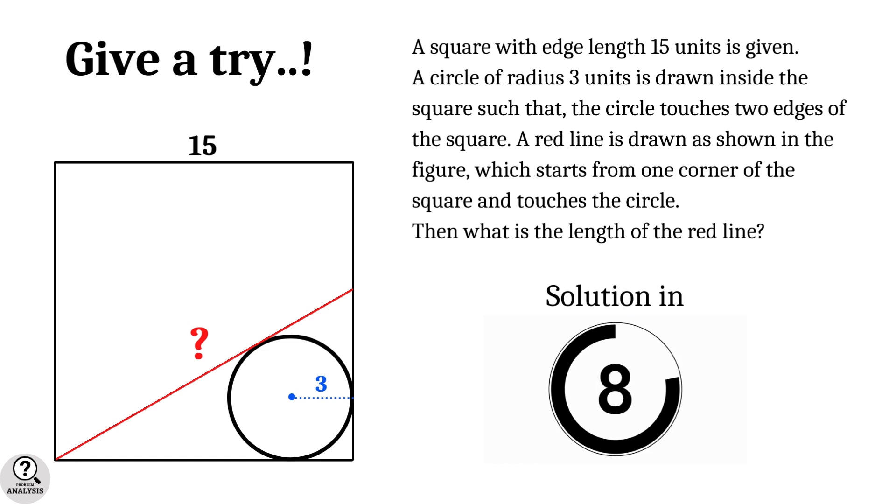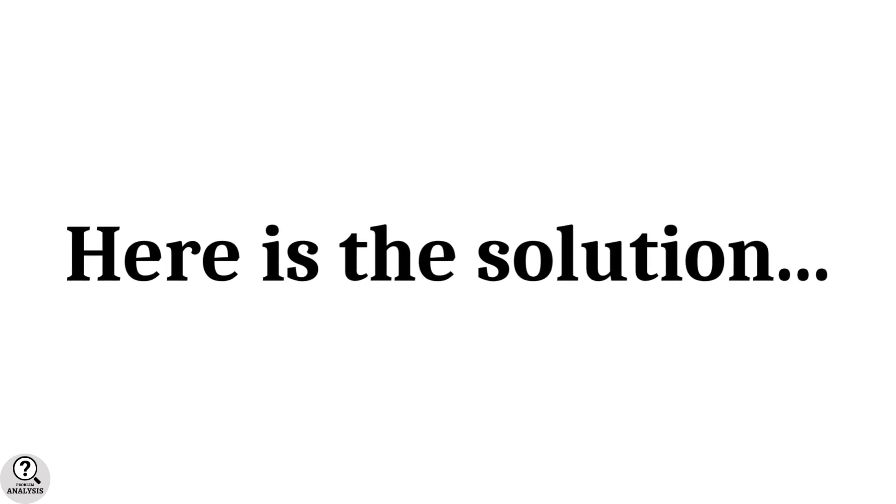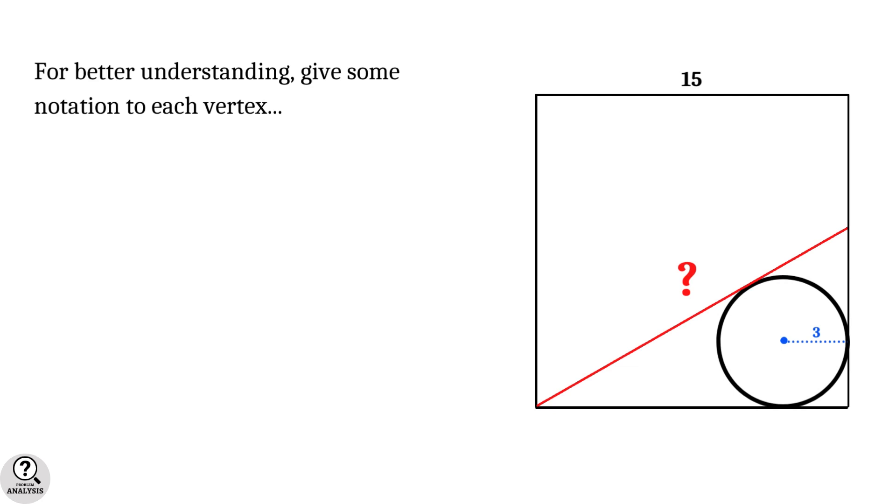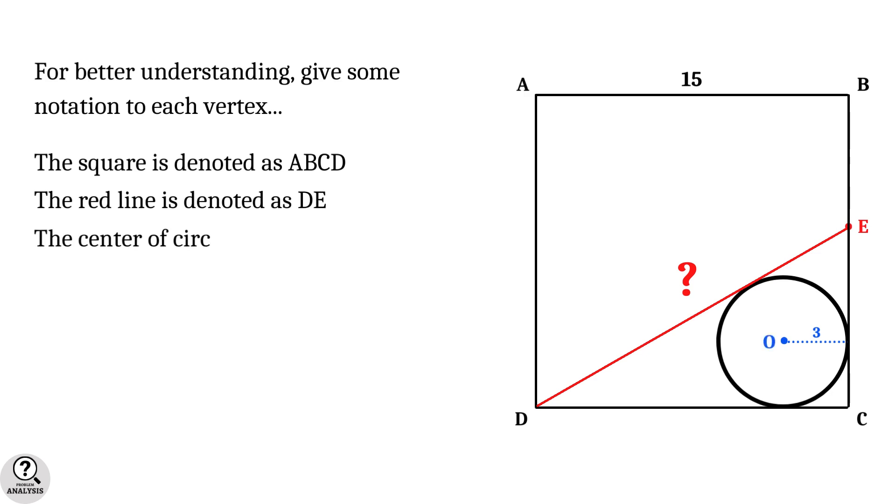The solution is right here. First let's give some notations to each vertex. The square is denoted by ABCD, the red line is denoted by DE, center of the circle is named as O, and finally the three touching points are denoted by F, P, and Q.